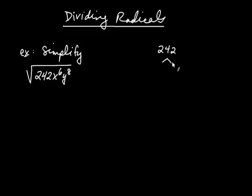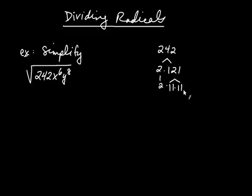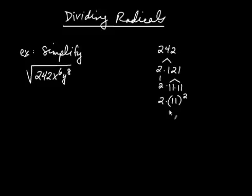So 242, using the tree diagram, is 2 times 121. Now 2 is prime, but 121 can be written as 11 times 11. When we get to the end and all factors are prime, if we have factors that are repeating, we write those in exponential form. So this will be 2 multiplied by 11 squared. We're going to go back and use this form to represent 242.